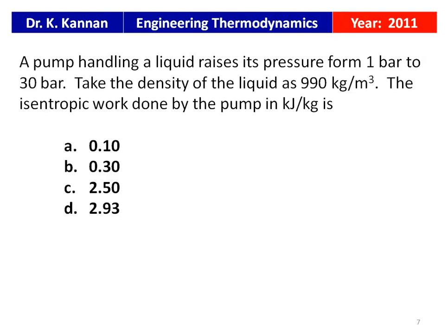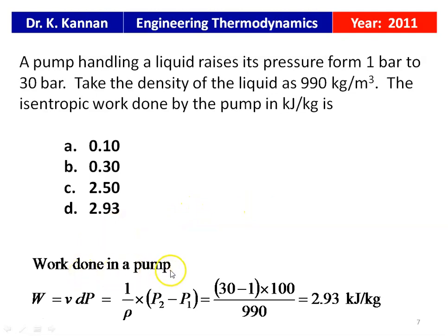Another question from the 2011 question paper: A pump handling a liquid raises its pressure from 1 bar to 30 bar. The density of the liquid is 990 kg/m³. The isentropic work done by the pump in kJ/kg is asked. Work done W = ∫VdP = (1/ρ)(P2 − P1) = (30 − 1) bar × 100 kPa/bar ÷ 990 = 2.93 kJ/kg. The answer is D, 2.93 kJ/kg.